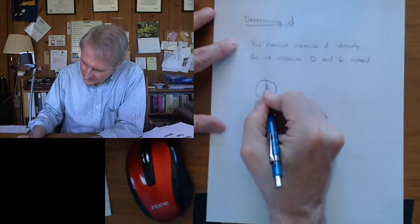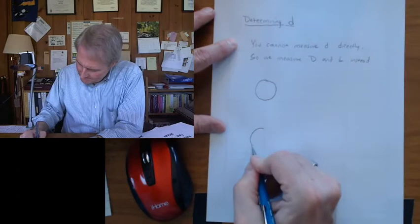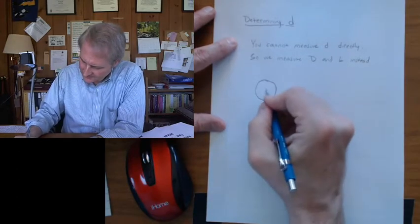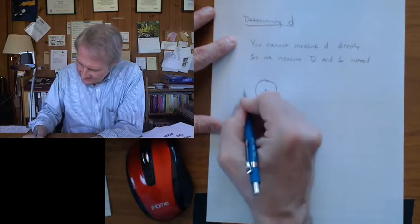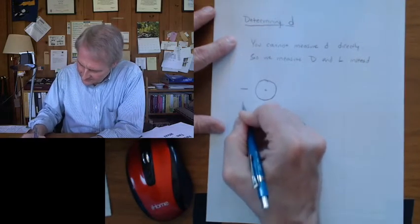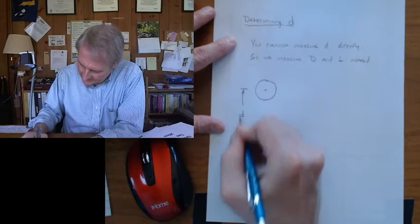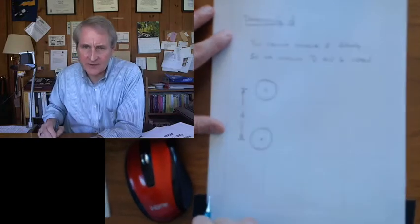If we zoom in on here, the wires are kind of thick. They have the same diameter. They're made of the same material. And what we want is the space between them. We want d, but you can't measure that directly.